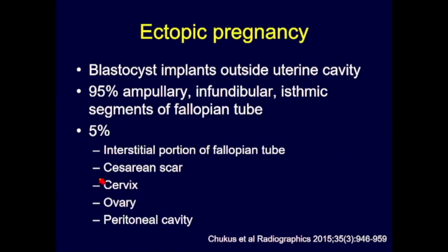A brief review of ectopic pregnancy: this occurs when a blastocyst implants outside the uterine cavity. Most commonly, the blastocyst implants in different portions of the fallopian tube — the ampullary, infundibular, or isthmic parts. Much less commonly, implantation occurs in the interstitial part of the tube, at the cesarean scar, in the cervix, the ovary, or the peritoneal cavity.